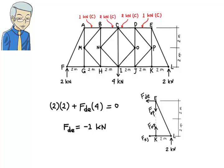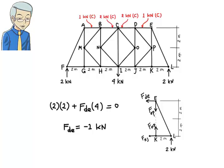This example leads us to an important conclusion. When using the method of sections, we may be able to find a desired member force using only the moment equilibrium equation. This generally works if we can find a point in the free body diagram through which all the additional unknown forces pass.